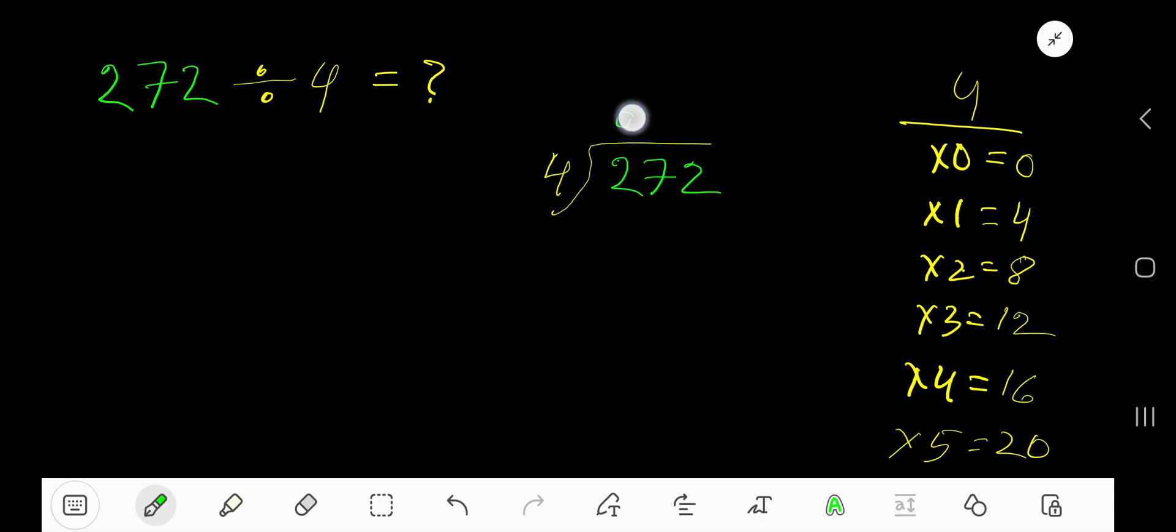4 goes into 2 how many times? 0 times, as 2 is less than 4. So 4 times 0 is 0, subtract.